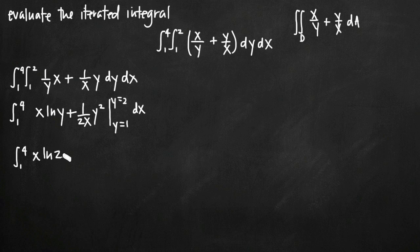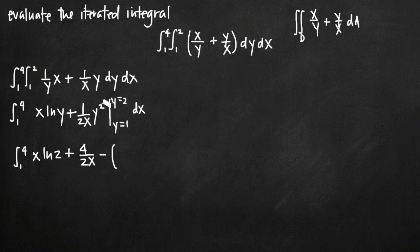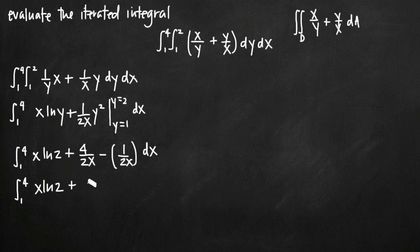We have the integral from 1 to 4. Plugging in the upper limit y equals 2: x times natural log of 2, plus 1 over 2x times 4 (since 2 squared is 4). Then we subtract the value at y equals 1: natural log of 1 is 0, so that term disappears. For the second term, 1 squared is 1, giving us 1 over 2x. Combining 4 over 2x minus 1 over 2x gives 3 over 2x, so our integrand becomes x times natural log of 2 plus 3 over 2x, dx.